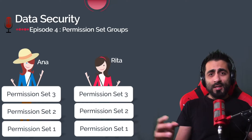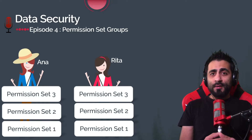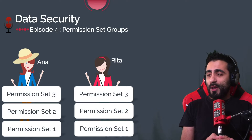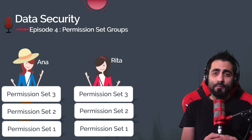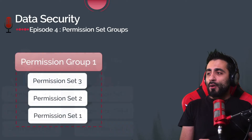As an example, we have Ana and Rita with the Sales Profile. Each of them have three permission sets assigned to them — the same permission sets. For that, we are going to group these three permission sets into one permission set group, so that we can assign to Ana and Rita the same permission set group that contains those three permission sets.